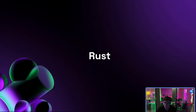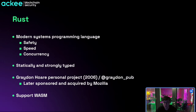Before we do any coding, let's briefly talk about Rust history and how Rust came to be one of the most favorite programming languages in the software development ecosystem. Rust is a modern systems programming language that prioritizes safety, speed, and concurrency. It is statically and strongly typed, and it was founded as a personal project of Graydon Hoare in 2006. In 2009 it was sponsored by the Mozilla Foundation and later maintained by Mozilla to this day.